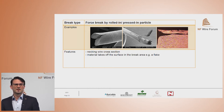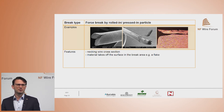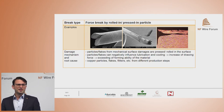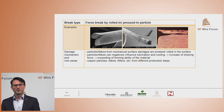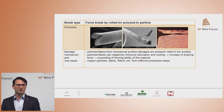The force break with rolled-in or pressed-in particles, also called a surface break, shows necking of the cross section, but typically there is material coming off the surface — material which was only pressed onto the surface. The damage mechanism and possible root cause are particles from mechanical surface damage that are pressed or rolled into the surface. These particles negatively influence lubrication and cooling and increase the drawing forces, ultimately exceeding the forming ability of the material. These particles, flakes, and slivers can come from different production steps.